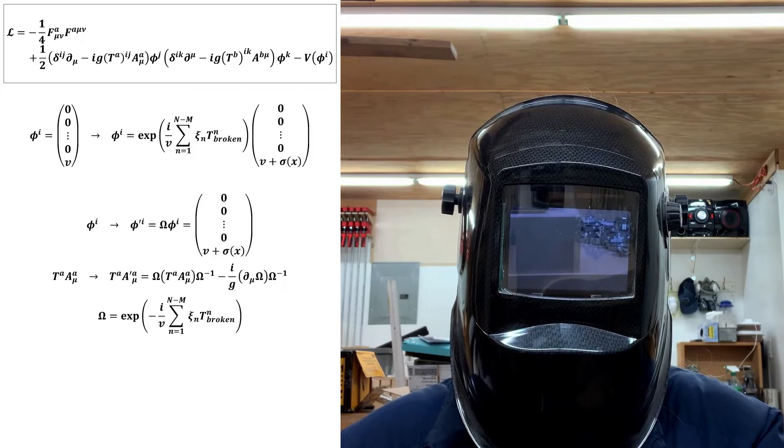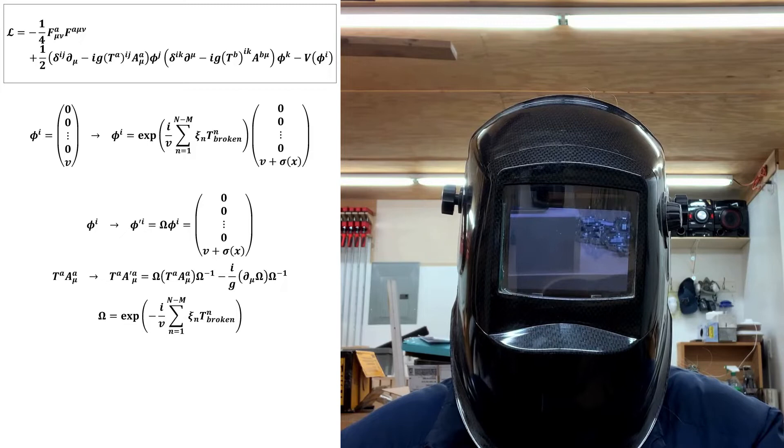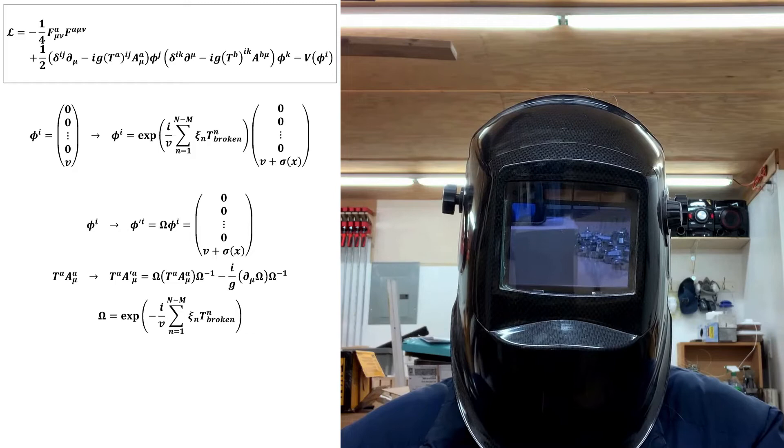The fields set equal to zero in the new scalar vacuum represent the subset of scalar field degrees of freedom that are affected by the symmetry transformation under which the vacuum, and therefore the spontaneously broken Lagrangian, is invariant.